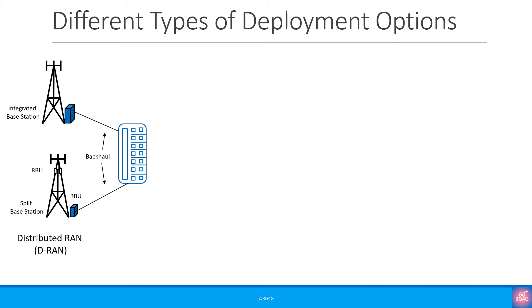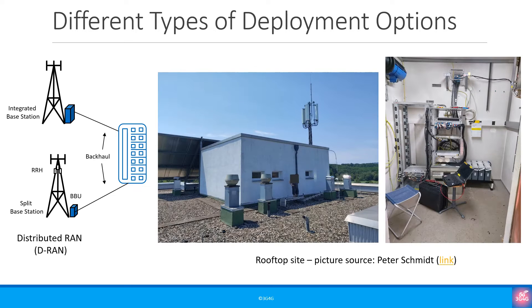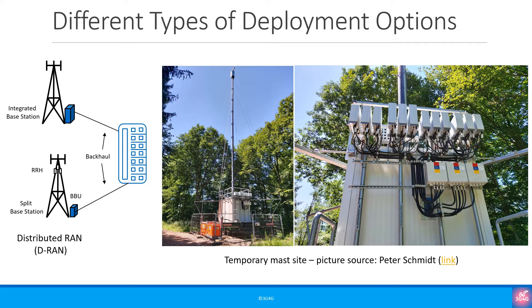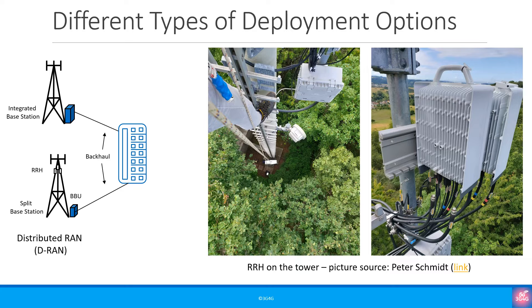There are different deployment options that need to be understood. The first is the distributed RAN, which is the most common deployment approach today for 2G, 3G, 4G and even 5G. In this approach, the BBU is in the cabinet at the bottom of the mast or tower and the RRUs and antennas are on the mast. For example, on a rooftop site the RRHs are on the roof and only the RF cable runs onto the mast. On a temporary site where the mast is thinner, the RRHs are at the bottom and RF cable runs to the top. On a long tower, the RRHs are placed up next to the antennas to avoid RF cable loss.